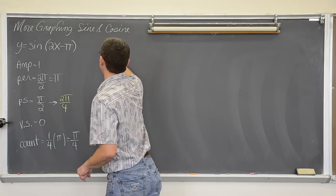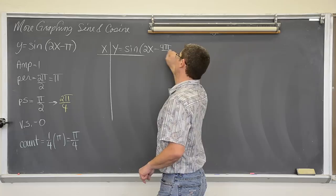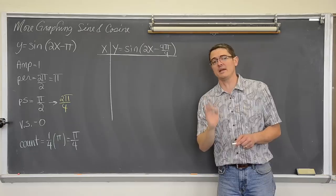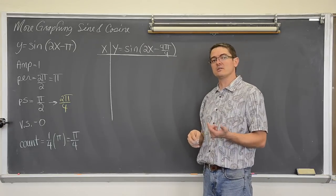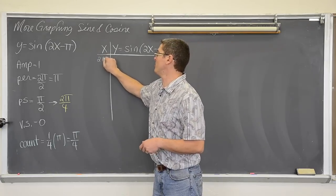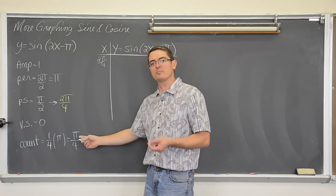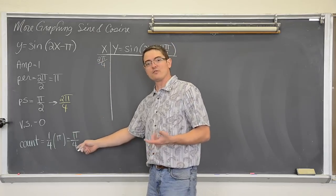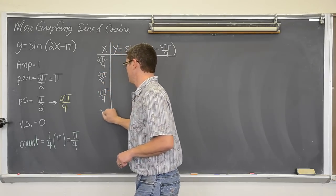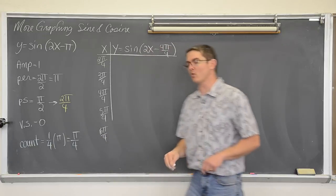Here is my t-table. x, and y equals sine of 2x minus 4π over 4. As long as you know how to deal with fractions and know just the quadrantal angles of the unit circle, really all the thinking parts of this question are done. We are going to start at the phase shift, which is 2π over 4. Don't bother reducing it. We count by 1/4 of the period: 2/4 plus 1/4 is 3/4, so 3π over 4, then 4π over 4, 5π over 4, and since you need five points, 6π over 4.